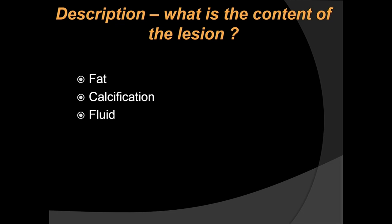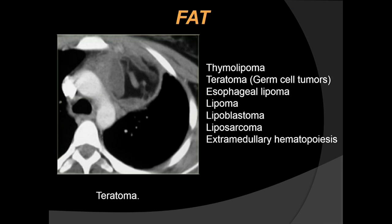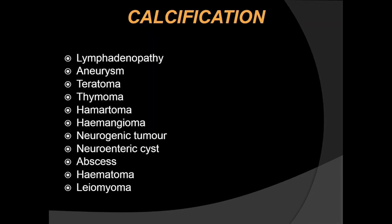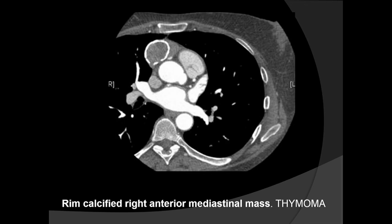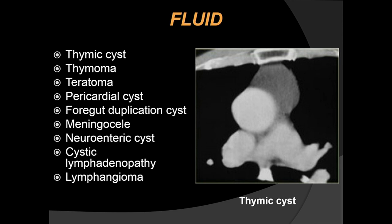After deciding the compartment, it is important to narrow the differential diagnosis based on the content of the lesion — specifically fat, calcification, and fluid. Common fat-containing lesions include thymolipoma, teratomas, and esophageal lipomas. An anterior mediastinal lesion containing macroscopic fat with cystic and solid areas turned out to be a teratoma. Calcific lesions show dense calcification; a rim-calcified lesion in the anterior mediastinum on CT turned out to be a thymoma. Fluid-containing lesions in the anterior mediastinum include thymic cysts, thymomas, teratomas, and pericardial cysts.